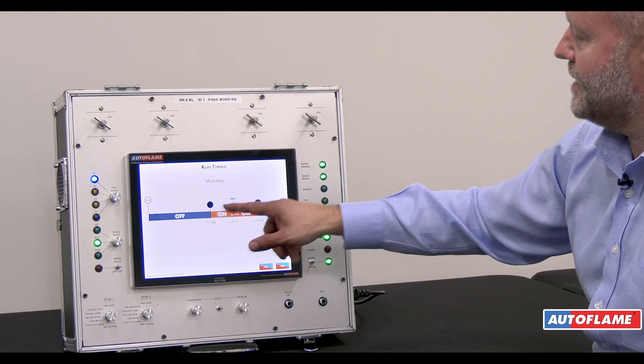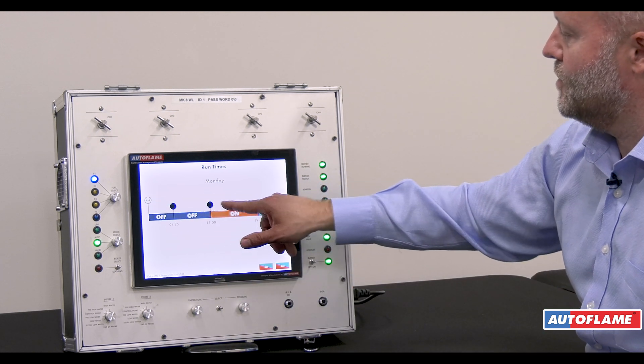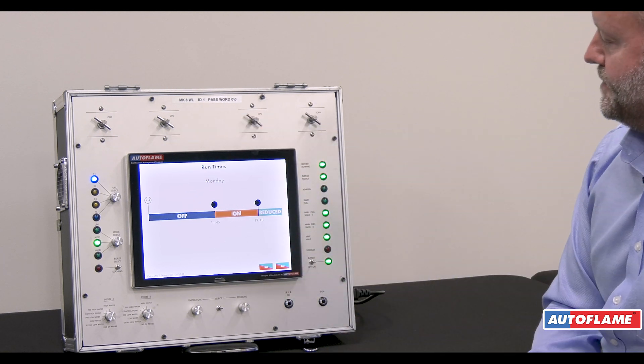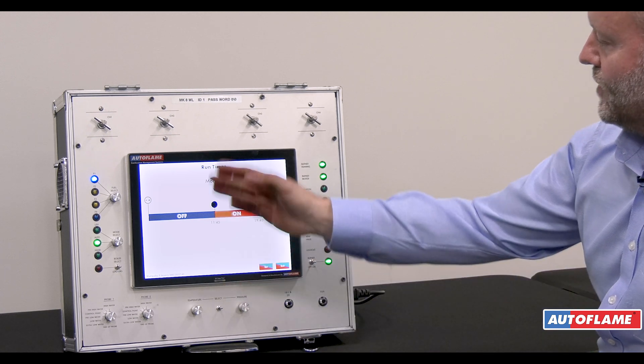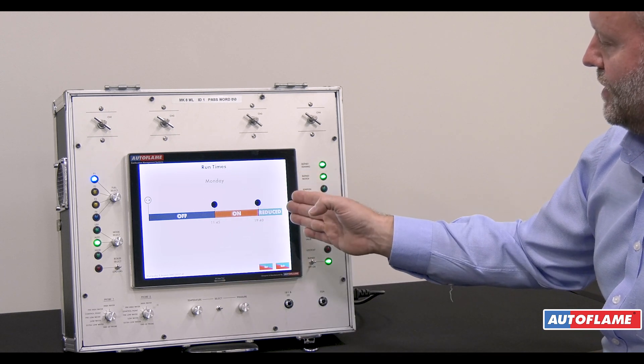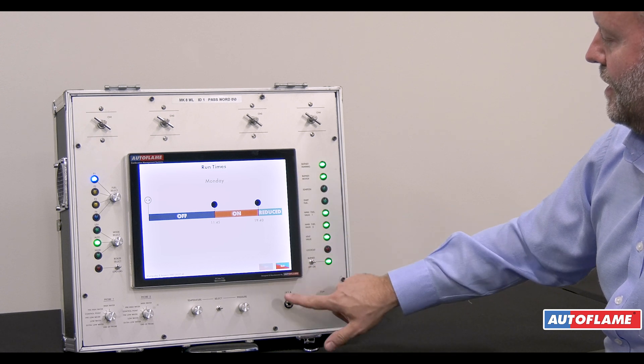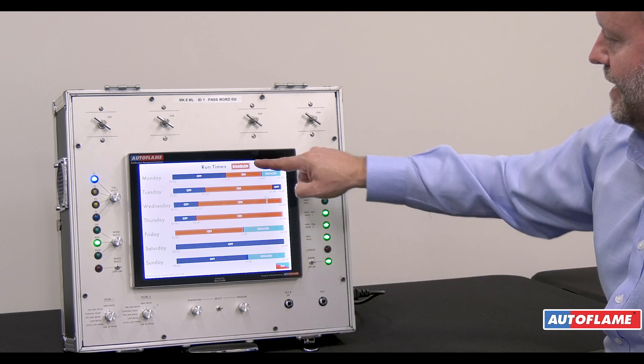I can drag as many of these as I wish moving around. If I want to get rid of them, just drag them up and they go away. So now this would be off, on, and reduced. This is how we can switch between our two set points, then exit, and that is saved.